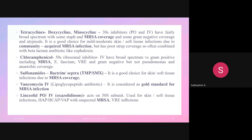Chloramphenicol is a 50S ribosomal inhibitor with good coverage for MRSA, Enterococcus faecium, and VRE, but it does not cover Pseudomonas or anaerobes and is not popularly used. Sulfonamides — Bactrim/Septra (trimethoprim-sulfamethoxazole) — also have good MRSA coverage and are a good choice for skin and soft tissue infections.